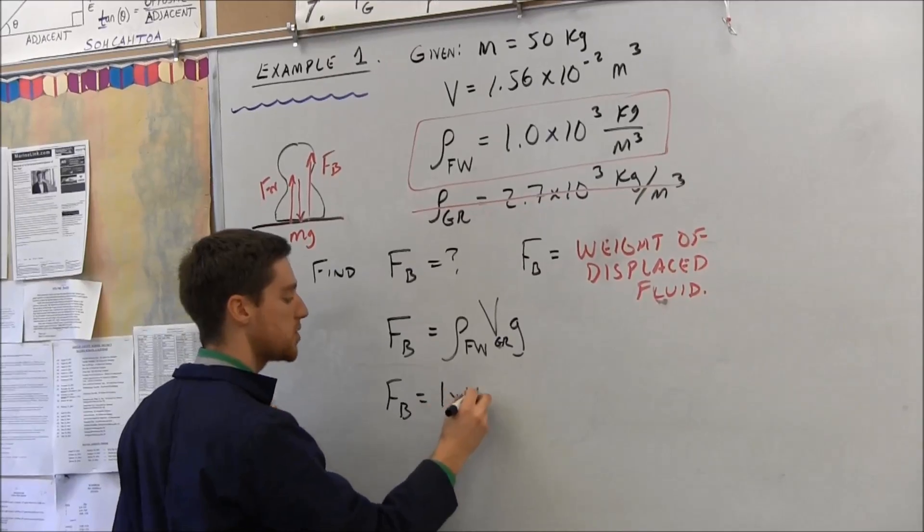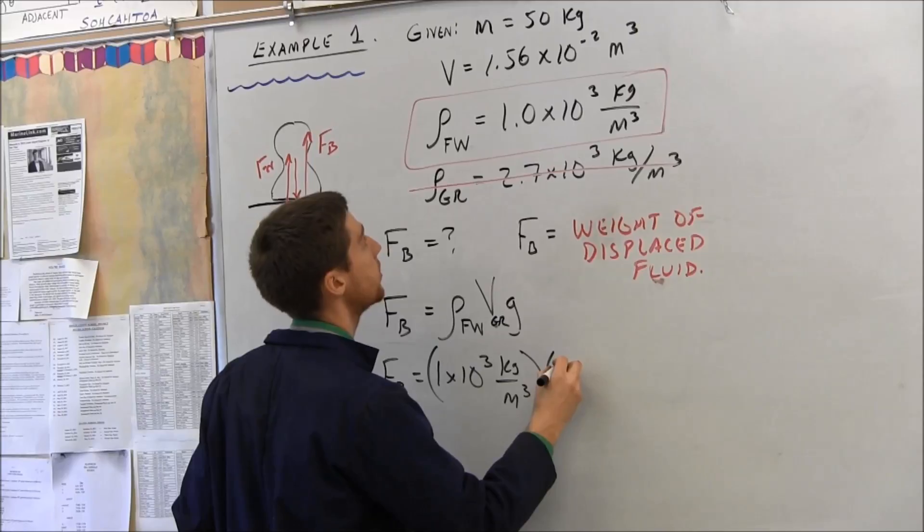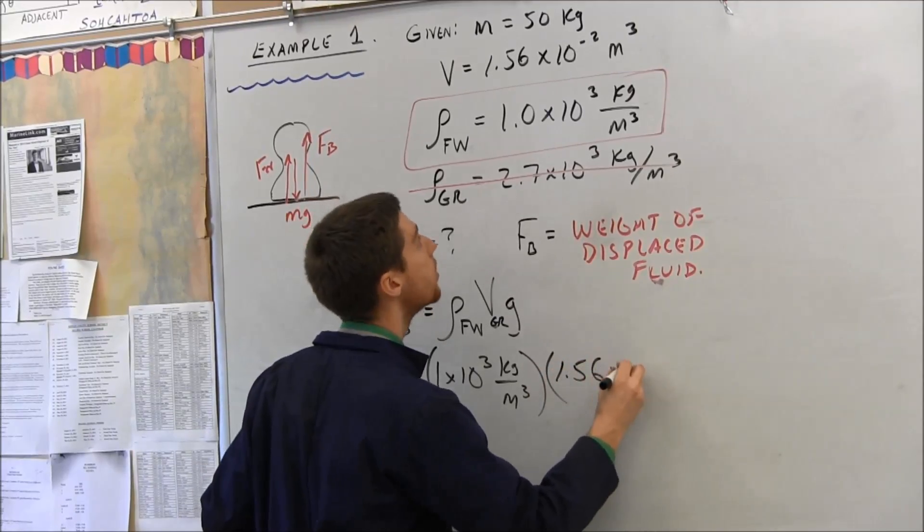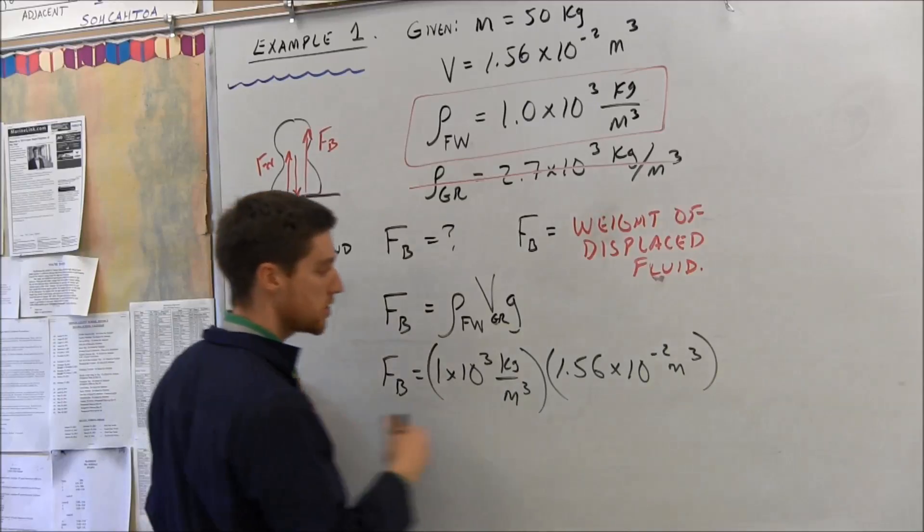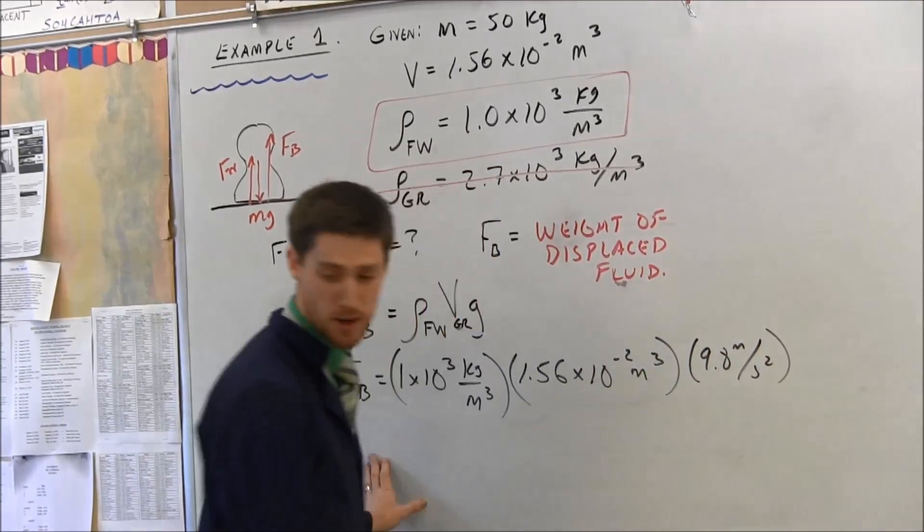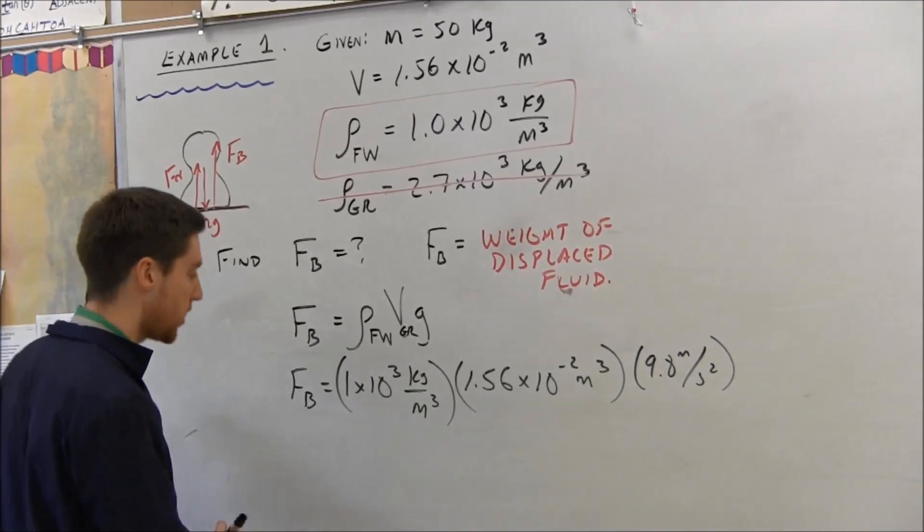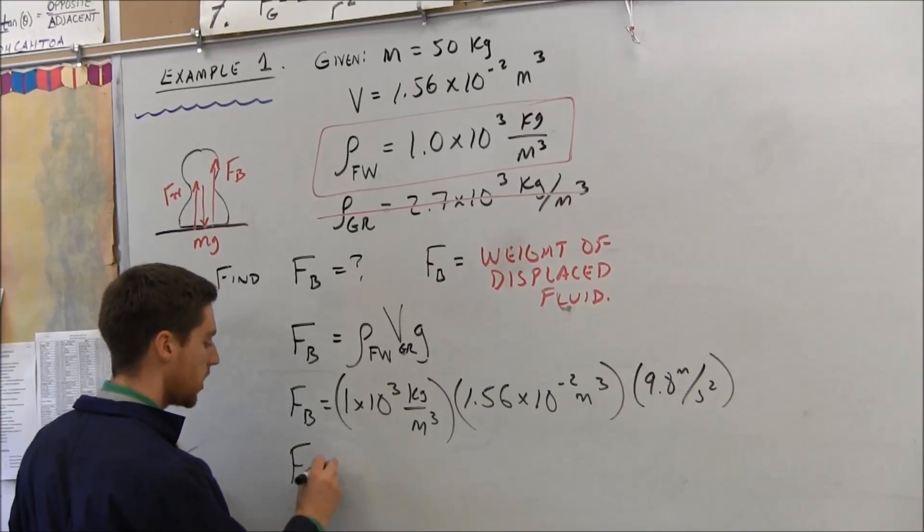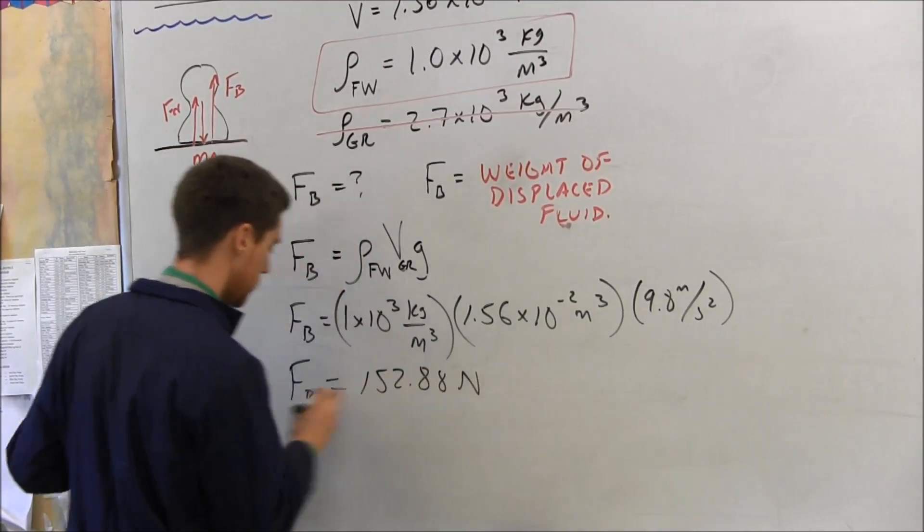When we go ahead and run this number, we'll take 1 times 10 to the third kilograms per cubic meter, multiply out that, take the volume cubic meters, and then lastly is gravity. 9.8 meters per second squared is g. And when you run that number, unless I made a mistake, you would have to go with the class consensus here. I'm expecting 152.88 newtons.